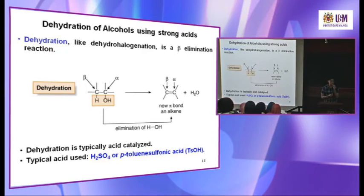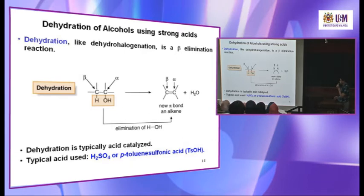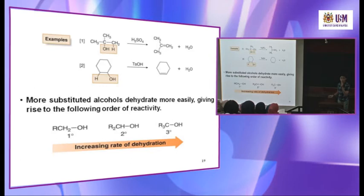Dehydration of alcohol using strong acid — the strong acid could be H₂SO₄. You convert the alcohol; you have the OH group attached to the alpha carbon, and you have a beta carbon with a beta hydrogen. This is the beta elimination reaction you studied last chapter. The acid used could be H₂SO₄ or p-toluenesulfonic acid. We can also see that the rate of dehydration increases from primary to secondary to tertiary alcohol.